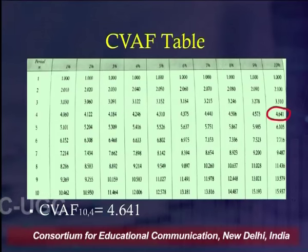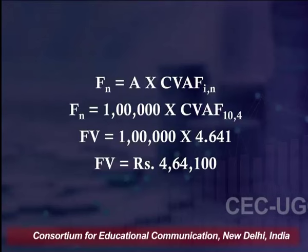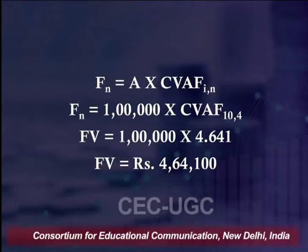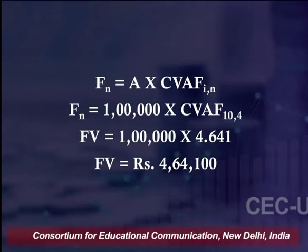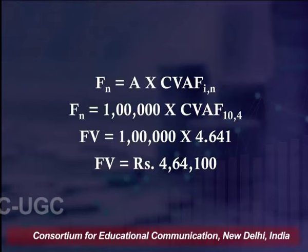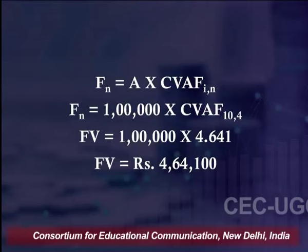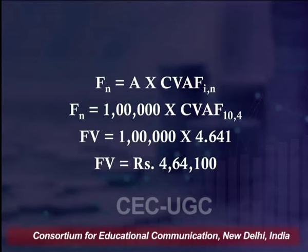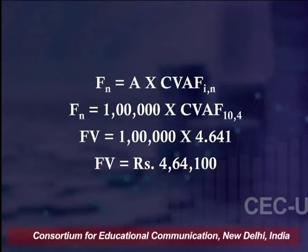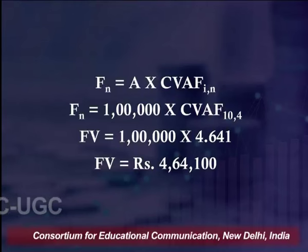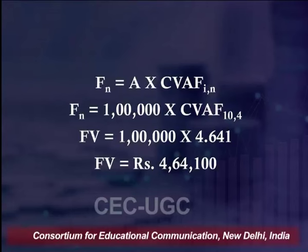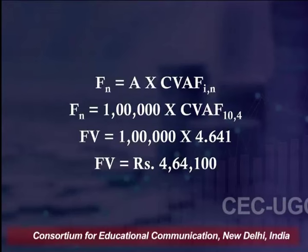The CVAF value for 10 percent, 4 years is 4.641. Using the formula: FV = Annuity × CVAF, we get FV = 1 lakh × 4.641 = rupees 4,64,100. So if this investor deposits 1 lakh at the end of each year for 5 years, he will receive rupees 4,64,100 at the end of 5 years. This is how compounding works.